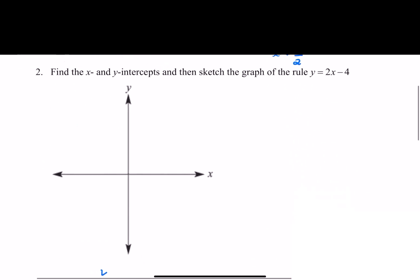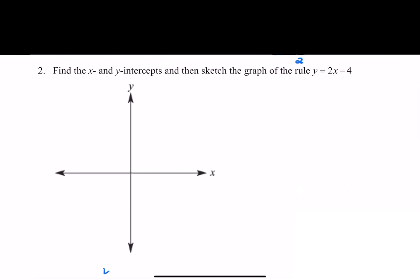For question 2, find the x and y intercepts and then sketch the graph. Well, I've told you before that the very best way of drawing a straight line is just to have two points, and those two points are very helpful if they are your x and y intercepts. Now the first thing I'm going to do is my y-intercept, and I can see that the y-intercept is here and that is -4.